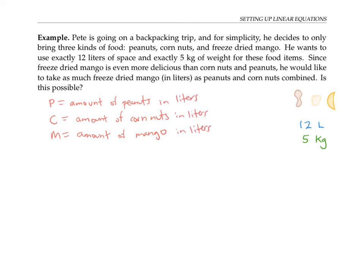Now, the fact that he wants to use exactly 12 liters of space for all this food already gives me one equation. I know that the amount of peanuts in liters plus the amount of corn nuts in liters plus the amount of mango in liters has to add up to 12 liters.